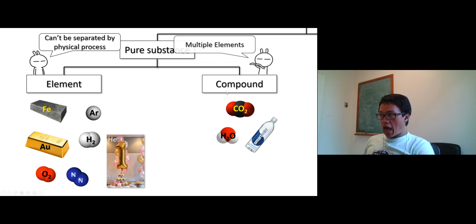On the other side, we have compound, which is basically multiple elements in it. For example, carbon dioxide - got carbon, got oxygen. Water - got hydrogen and oxygen in it. So pure substance, we have element and compound. Element, just one element. Compound, multiple elements.